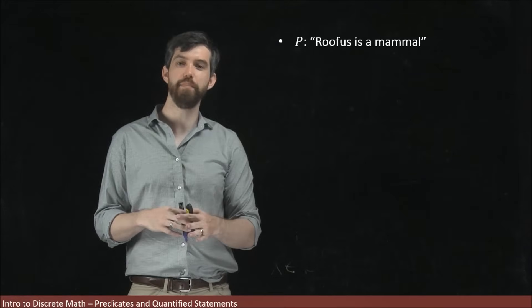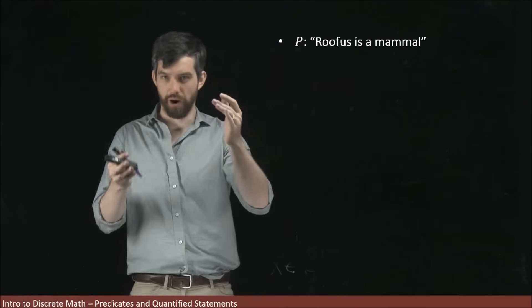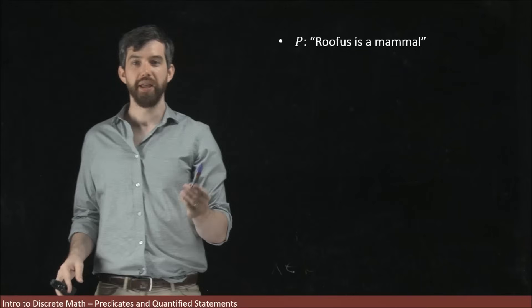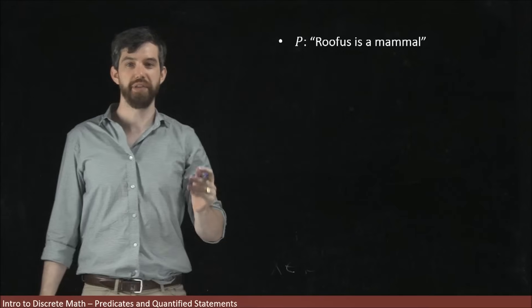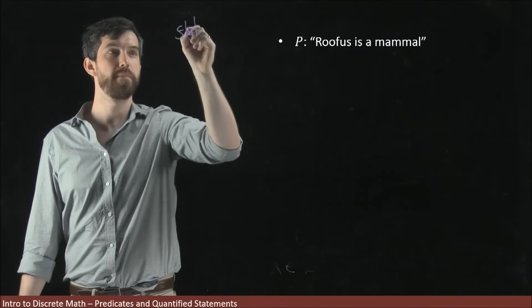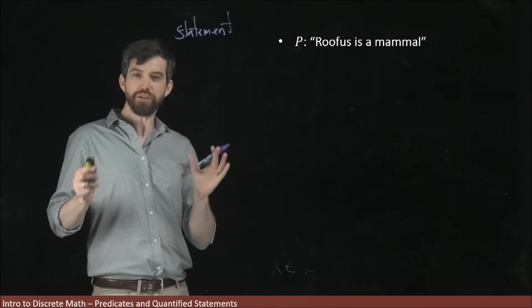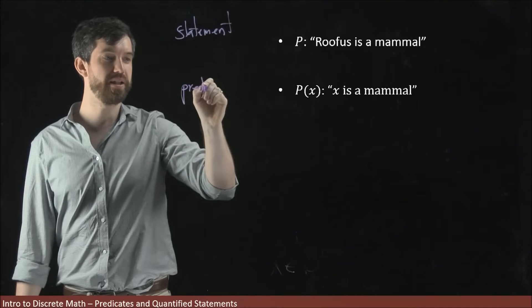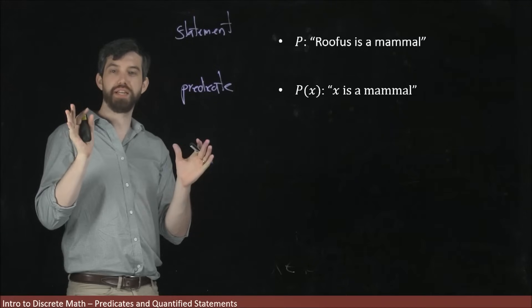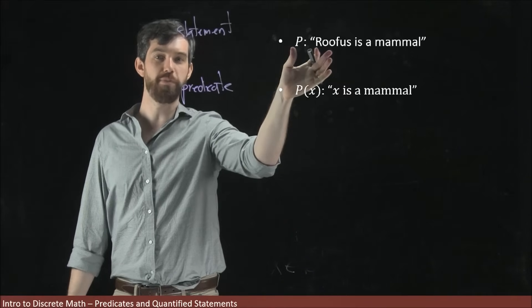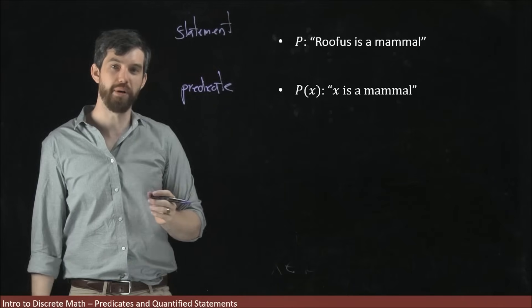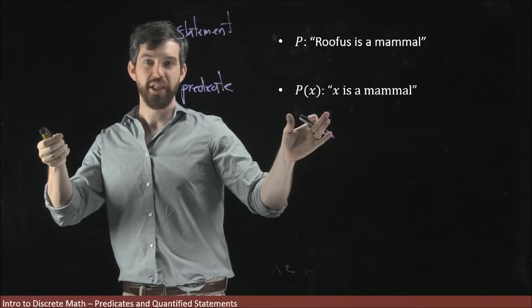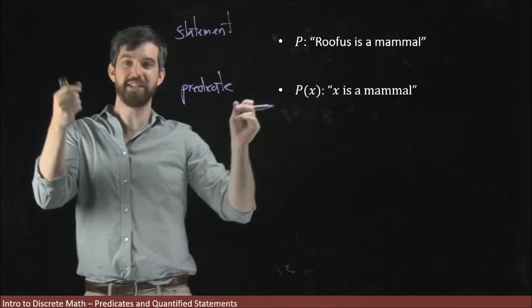It's important to keep in mind the difference between logical statements, which are true or false, and predicates, which depend on the input variable X in some domain. For example, 'Rufus, a particular dog, is a mammal' is a statement — we write P(Rufus). Contrast that with 'X is a mammal,' which is a predicate — we write P of X. When it's a statement, a particular animal is identified. When it's a predicate, it depends on whether the input is a dog, a reptile, or anything else, so we write P of X because it depends on that input.